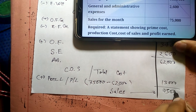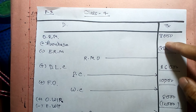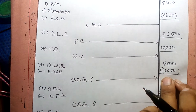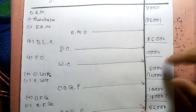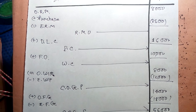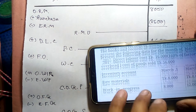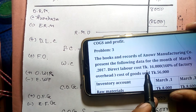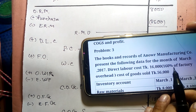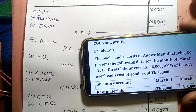Summarizing the cost sheet: purchase, raw material used, prime cost, works cost, cost of goods production, and cost of goods sold — these are the nine key line items. The factory overhead is calculated as an exercise percentage of direct labor cost. The full cost sheet structure is now complete.